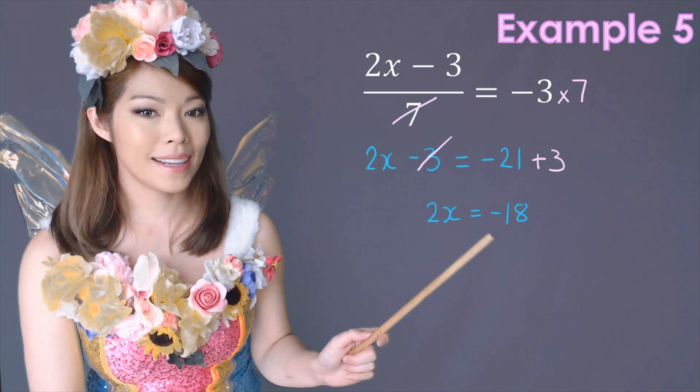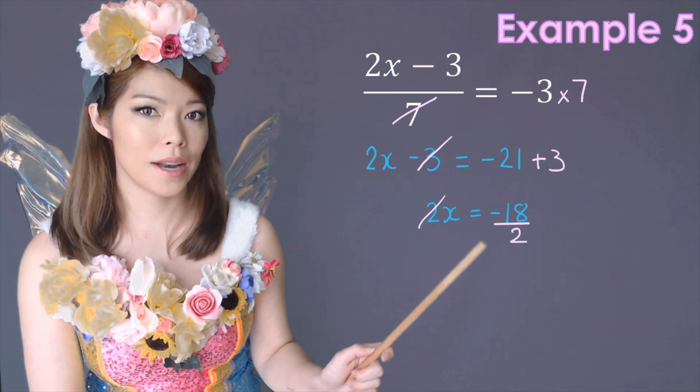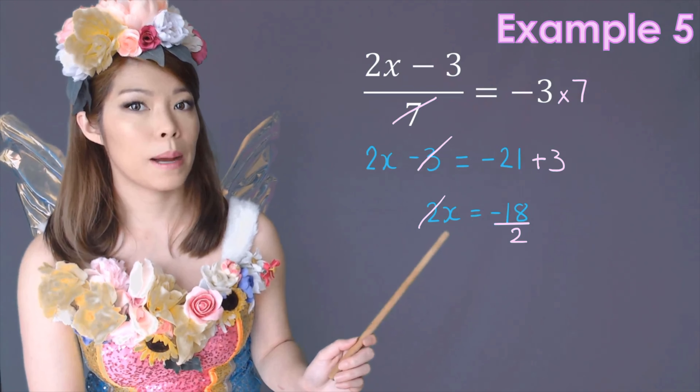Now that we have 2x equals minus 18, we need to get rid of the 2. Dividing both sides by 2, we have minus 18 divided by positive 2. A negative and a positive becomes a negative. So now we have x equals negative 9. Check by substituting into the left-hand side. 2 times negative 9 is negative 18. Negative 18 minus 3 is negative 21. Negative 21 divided by 7 is negative 3, which is equal to the right-hand side. If it ever doesn't equal the right-hand side, go back to the start and check your working until they match.